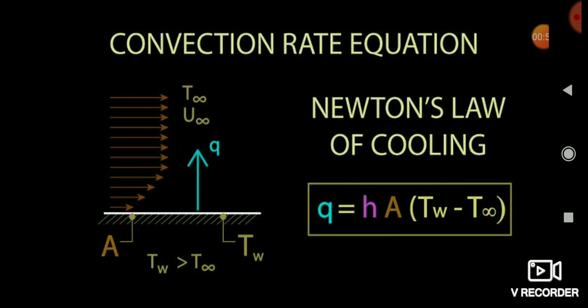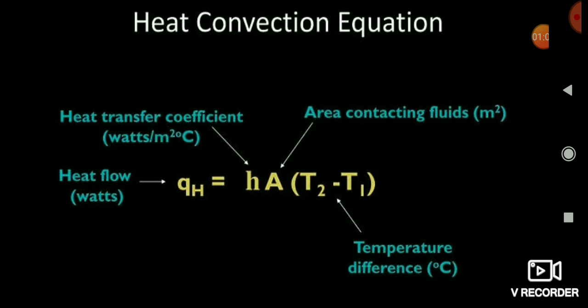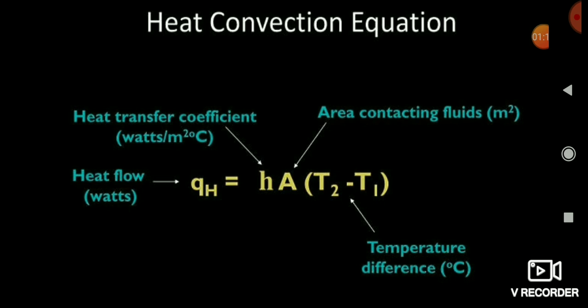Here T_w minus T_∞ represents the temperature difference between wall and fluid. Sometimes the fluid temperature is greater than the material temperature, so the direction reverses. The heat transfer coefficient is h, and A is the area in contact with the fluid — not the total area of the object, but specifically the surface touching the fluid.